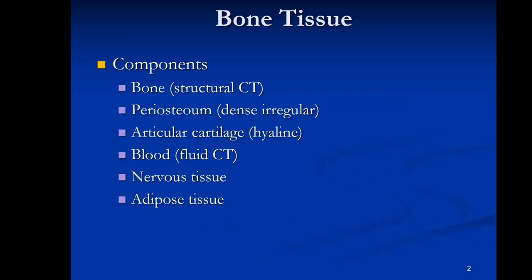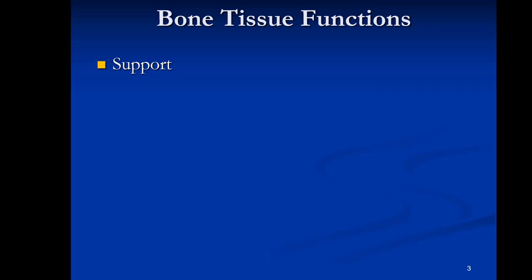A little background: even though bone is itself a connective tissue, it is associated with other tissues. It consists of bone, which is structural connective tissue, surrounded by a membrane called the periosteum — dense irregular tissue that protects the bone. There's also articular cartilage, which is hyaline cartilage found where bones meet at joints to cushion them. Blood is inside bones, and bones are innervated by nervous tissue so you can sense pain. Adipose tissue is also found within bone.